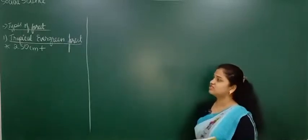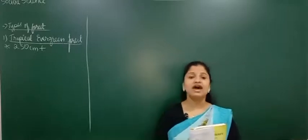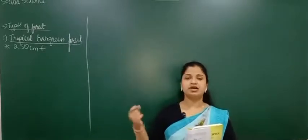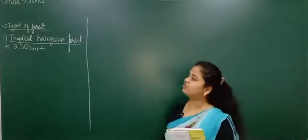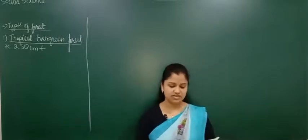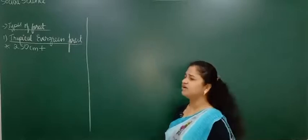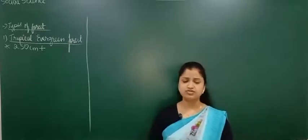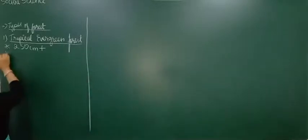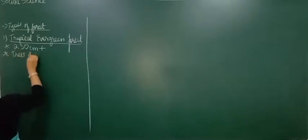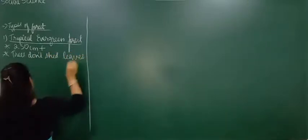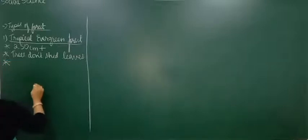Tropical evergreen forest is called 'evergreen' because the trees here never shed their leaves. The leaves will not become brown and fall. It is always green in colour, which is the important characteristic of this forest. Trees don't shed their leaves — that is the key feature of tropical evergreen forest.